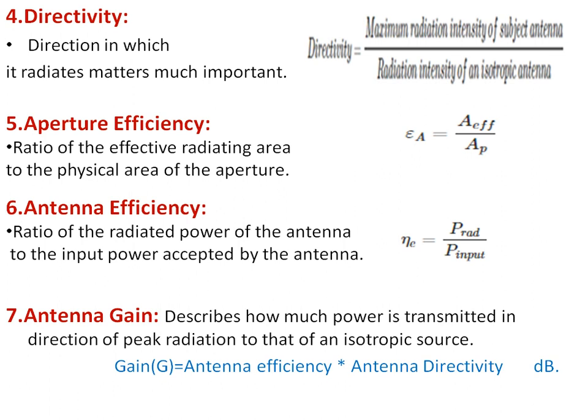The next parameter is antenna efficiency. Antenna efficiency is the ratio of radiated power of an antenna to the input power accepted by the antenna. The power given to the antenna to radiate — it should radiate the same amount of power as given at the input. The formula is: P_radiated divided by P_input. This efficiency should also be high.